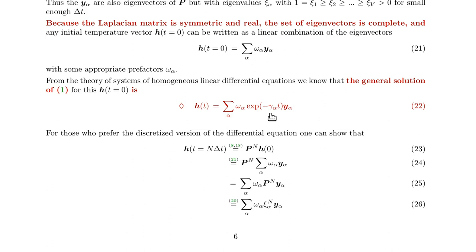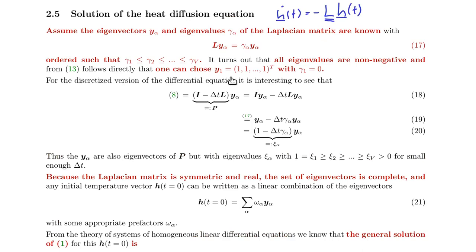A positive eigenvalue means that the solutions decay over time. So in the end, if you wait long enough, all the solutions decay, except for the one with gamma equals zero. That just stays put. And that means, intuitively, that in the long run, all the nodes have same temperature, because our eigenvector with eigenvalue zero is the one vector.